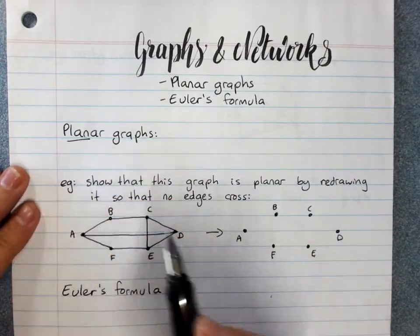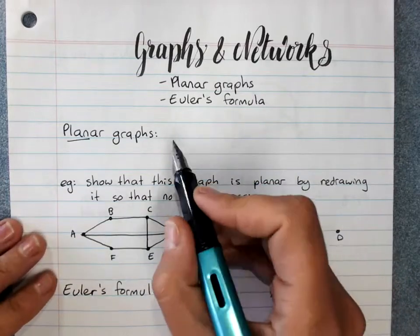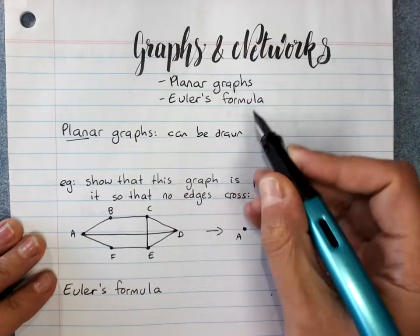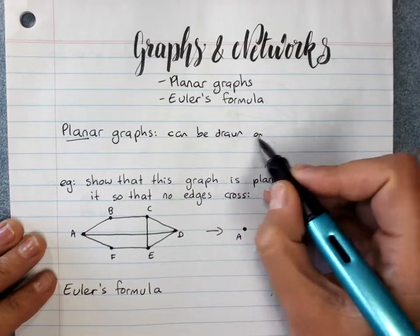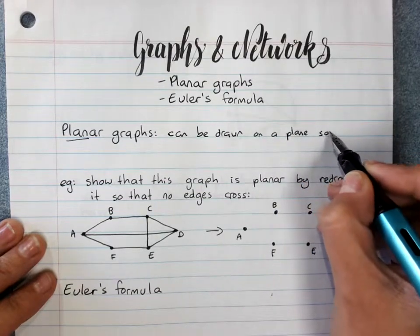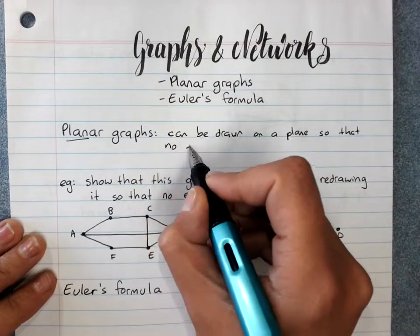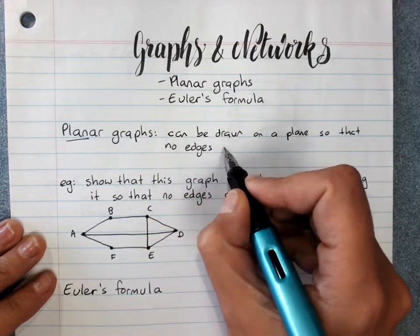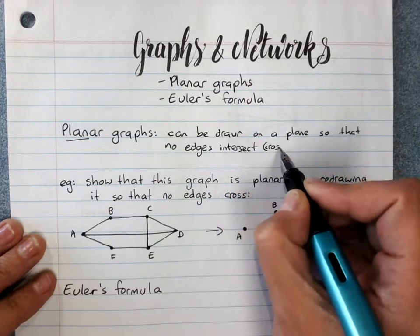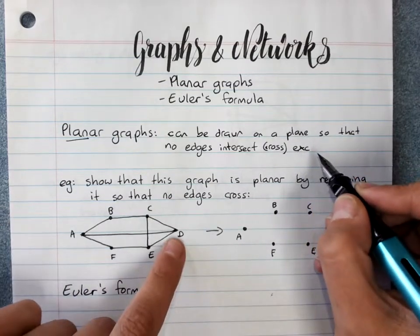Planar graphs. The word plane means a flat surface like this piece of paper, and so a planar graph can be drawn on a plane, that is a flat surface on paper, so that no edges cross, or intersect, except of course that they all intercept at vertices.